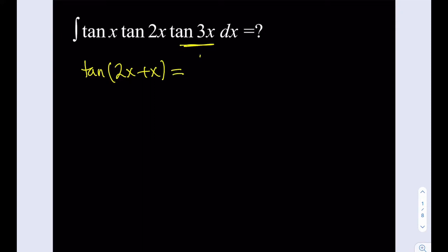So I'm going to use that formula here. It's going to look like tangent 2x plus tangent x divided by 1 minus tangent 2x multiplied by tangent x.